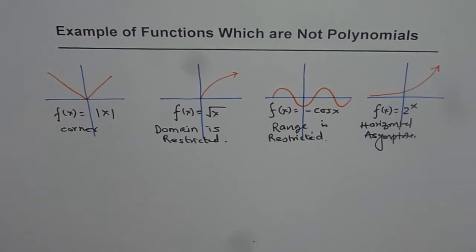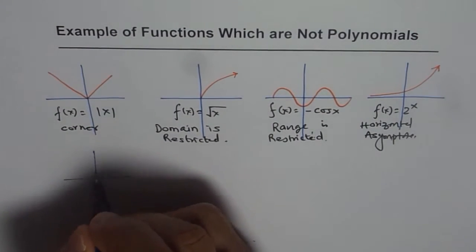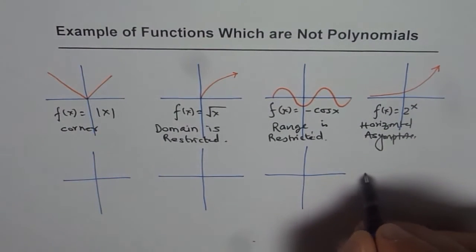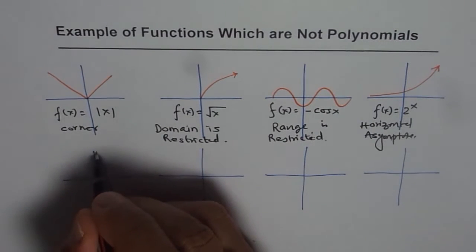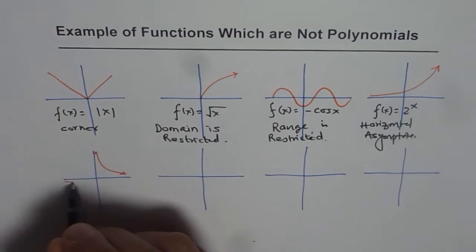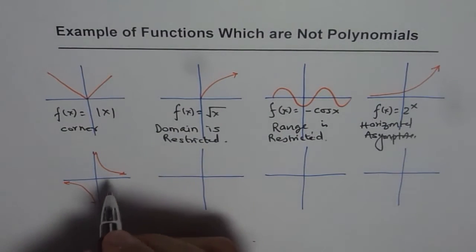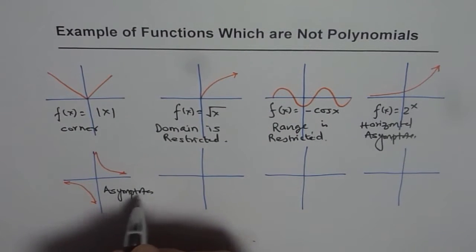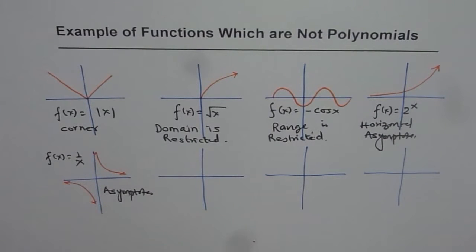We can draw many more functions which are not polynomials — let me sketch four more. Consider a function that has both a horizontal and a vertical asymptote, such as f(x) = 1/x. It has asymptotes, and that is why it is not a polynomial.